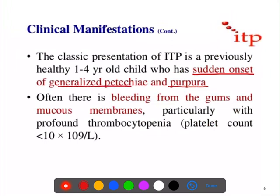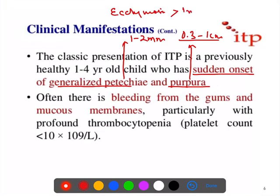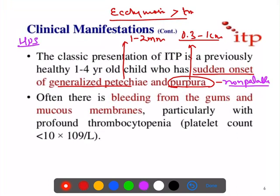The clinical manifestations include sudden onset of generalized petechiae and purpura. Petechiae are bleeding spots one to two mm in diameter, purpura are 0.3 to 1 cm in diameter, and ecchymosis is more than 1 cm. The petechiae and purpura found in ITP are non-palpable — you cannot palpate them — while in hemolytic uremic syndrome you find palpable purpura.